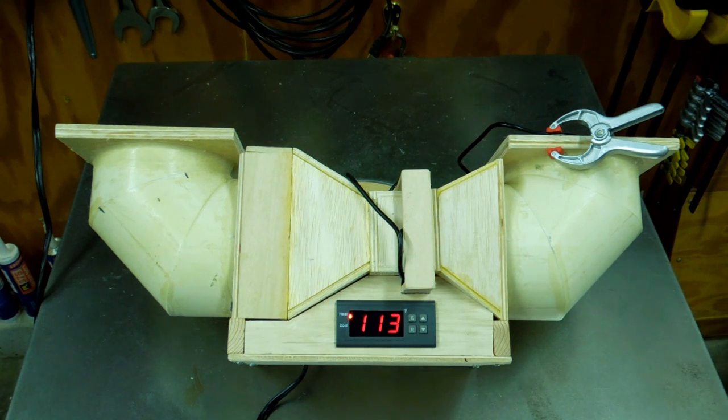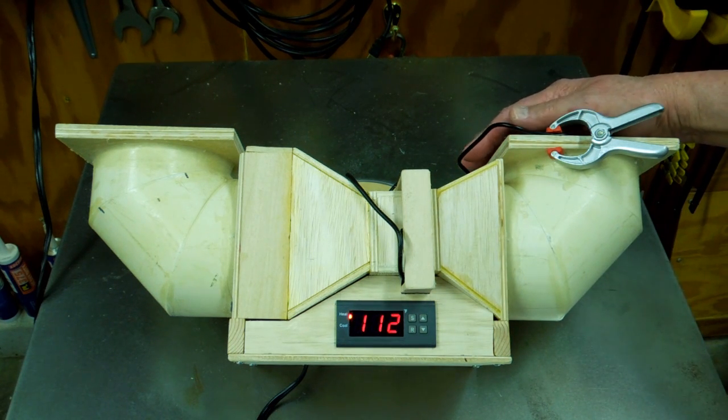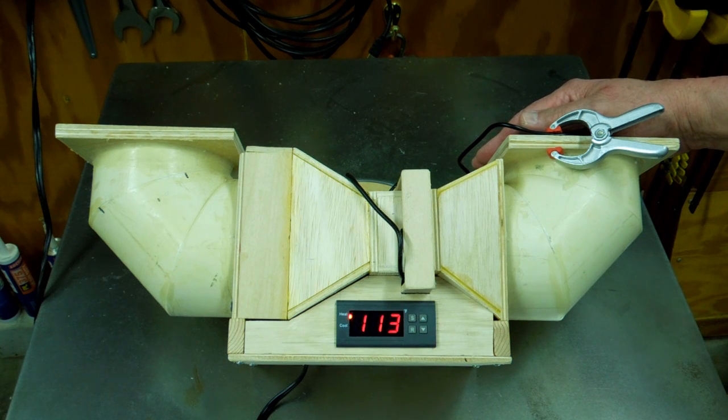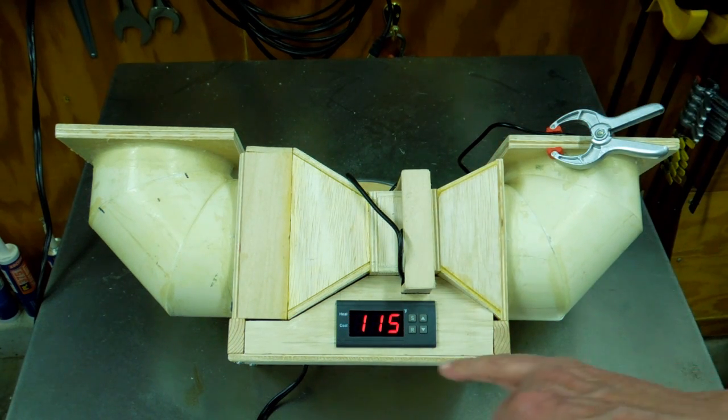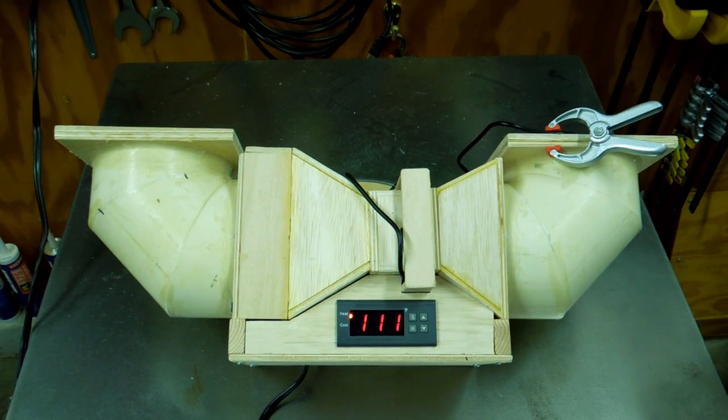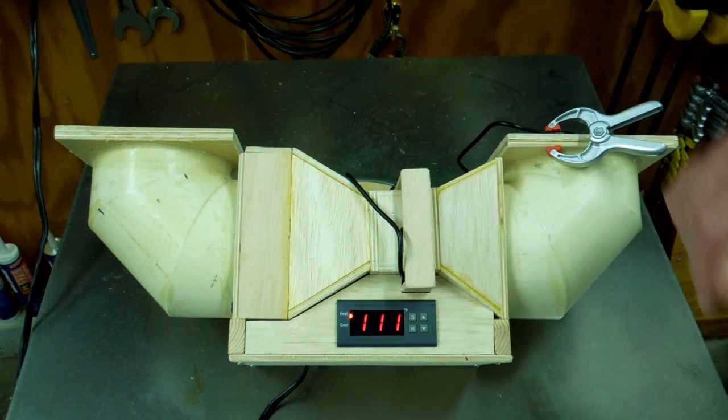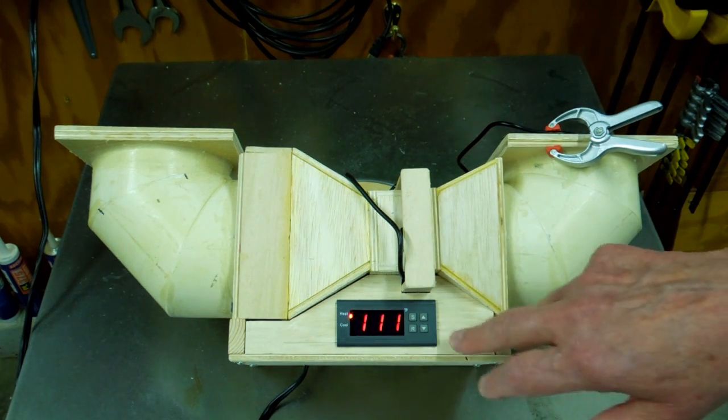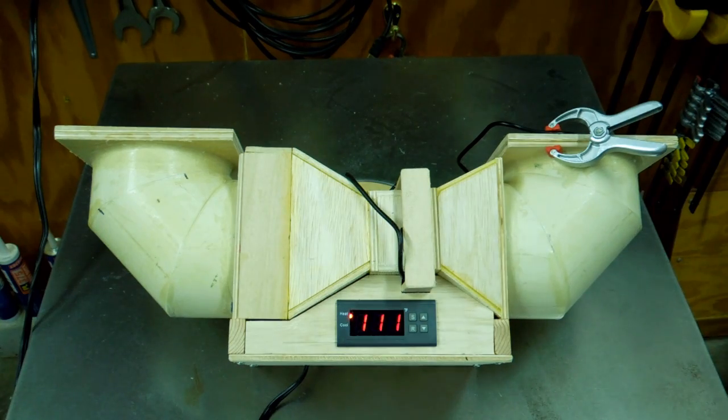When it gets to 114 degrees, the controller turns the heater back on, but the heating element has cooled off, so it will continue to drop in temperature until the element has a chance to recuperate. It's back up to 115. It's turned off the heating element, and the cycle repeats. When this is mounted onto the hotbox, I believe this will be able to maintain 150 degrees fairly easy.